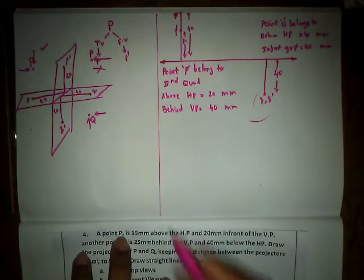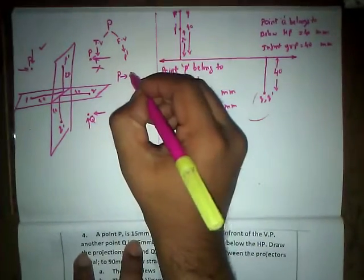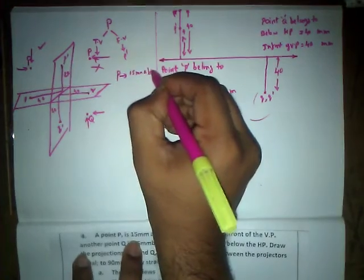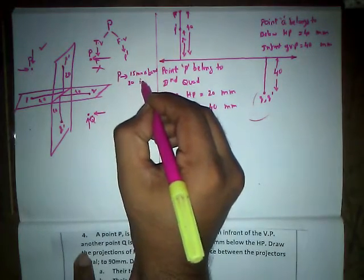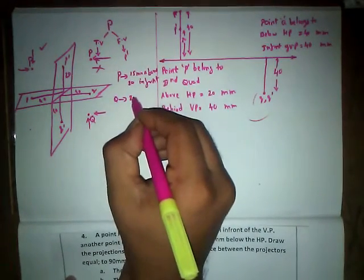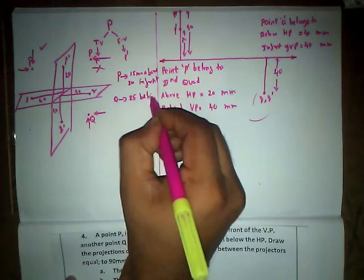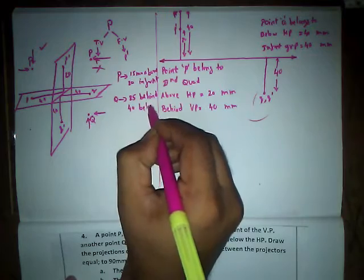Let us shorten the question. For point P: 15mm above HP and 20mm in front of VP. For point Q: 25mm behind VP and 40mm below HP. The projector distance is 90mm.